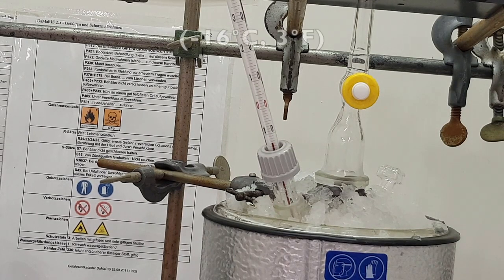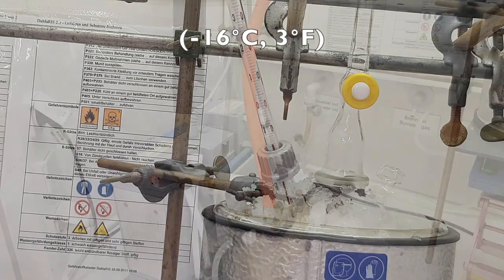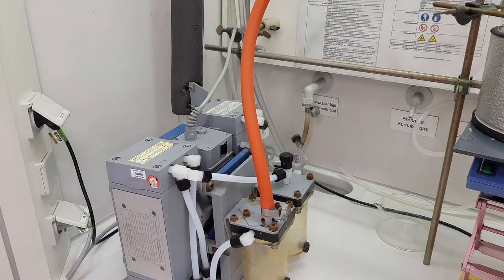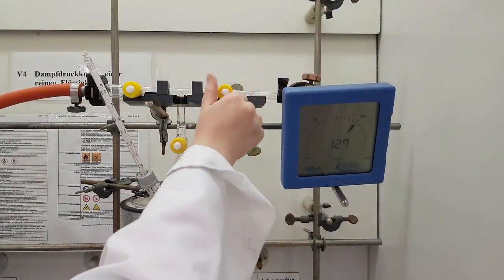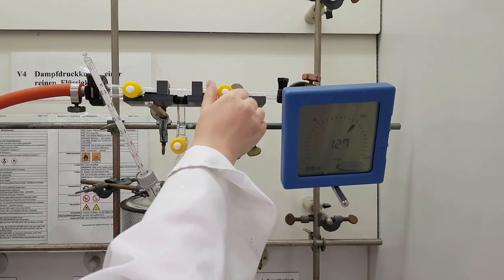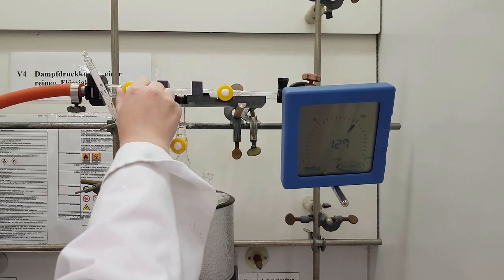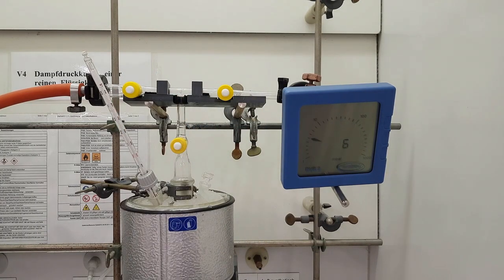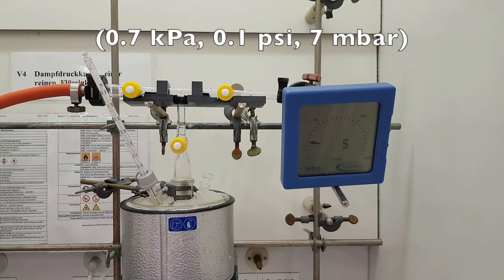As soon as negative 16 degrees Celsius is reached, the vacuum pump is switched on. Open stopcocks 2 and 3 with stopcock 1 closed. Wait until the pressure gauge indicates a pressure of less than 0.7 kPa. Then carefully open stopcock 1.